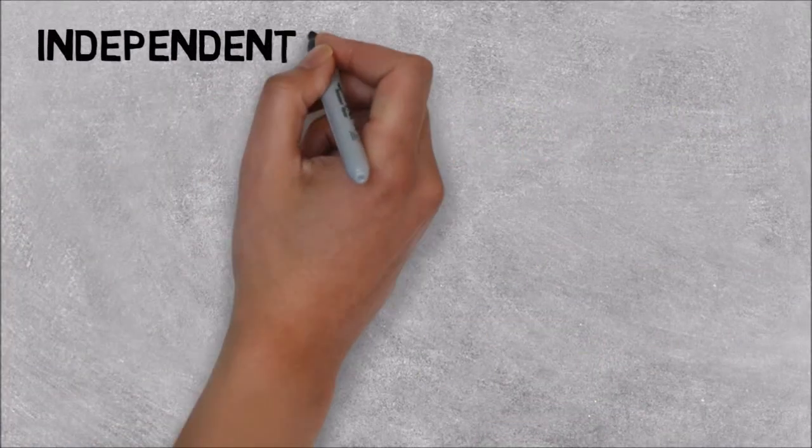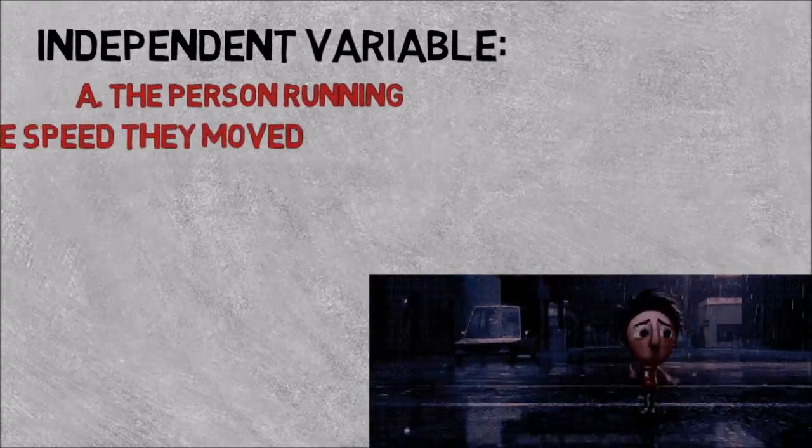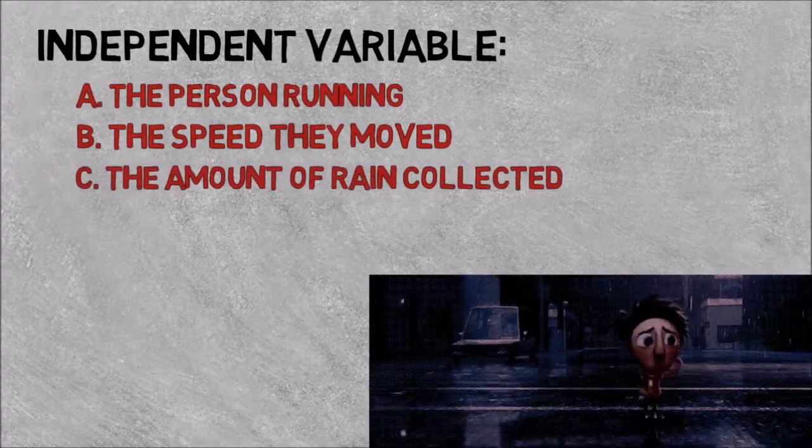So can you identify the independent variable? Was it the person running through the rain, the speed of movement through the rain, or the amount of rain collected on their clothing?